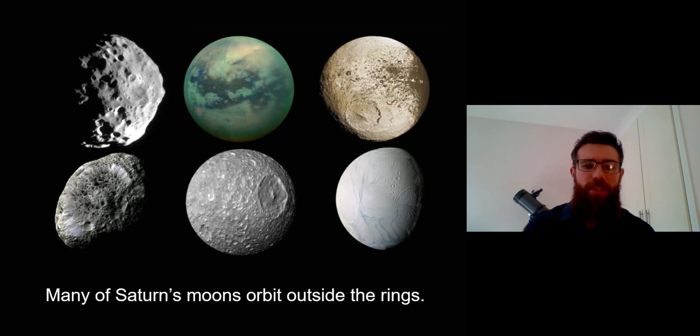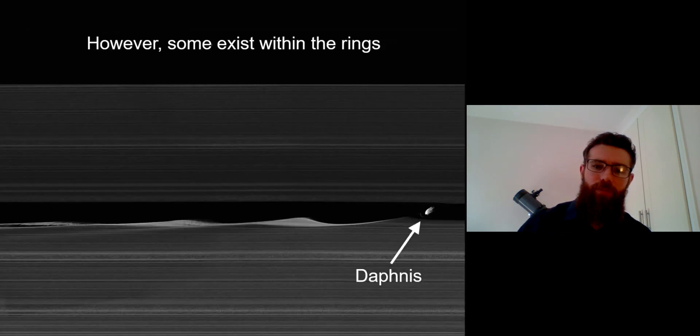There's a few things that can cause these gaps. You have moons orbiting outside the rings—Titan, its biggest moon, Enceladus, and lots of different moons. These are causing orbital resonances that can create a gap in the ring. However, there are actually some moons that orbit within the rings.